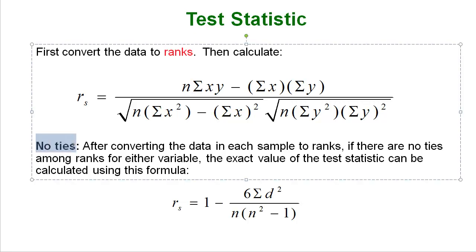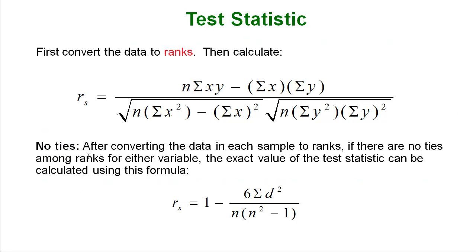And then remember that you have to have no ties. So after converting the data into each sample to ranks if there are no ties at all among your ranks meaning you didn't have any data with the same numbers so you didn't have any ties amongst your ranks then the exact value of your test statistic, your rs, is here which is very simple. 1 minus 6 times the sum of the differences squared. Take each difference and square them and sum them up all over n times n squared minus 1. Very simple stuff. Technology can do it for you.